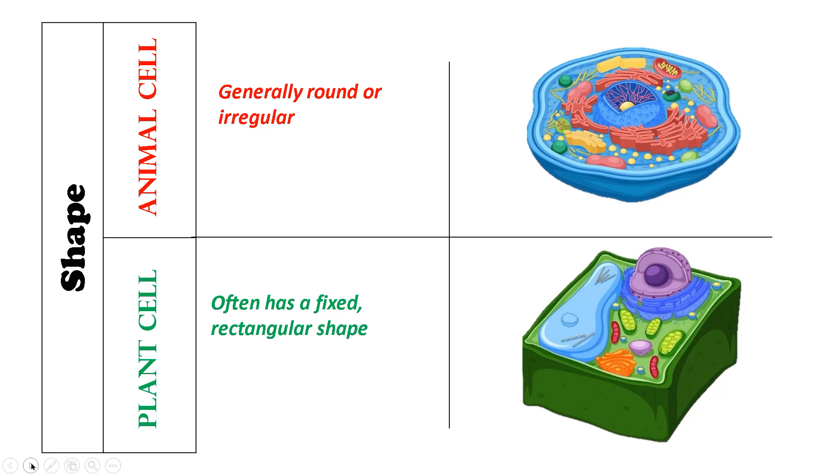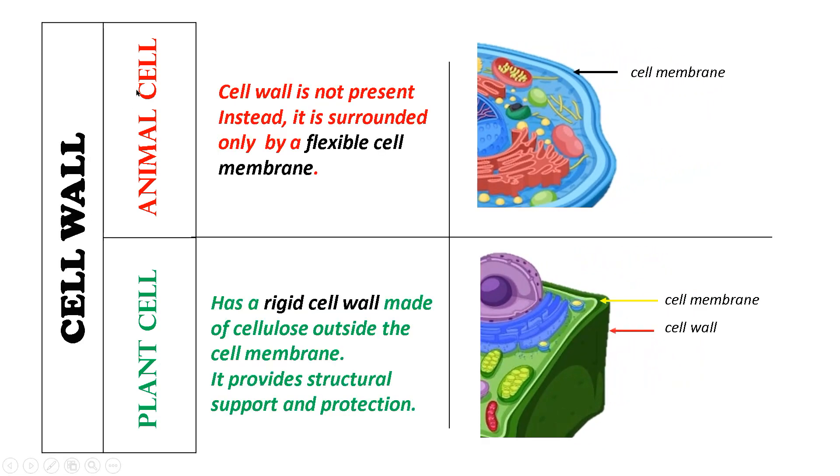The next difference is cell wall. Animal cells do not have a cell wall; instead, these cells are surrounded by a flexible cell membrane. The flexibility of the cell membrane enables animal cells to act like shape-shifting ninjas.